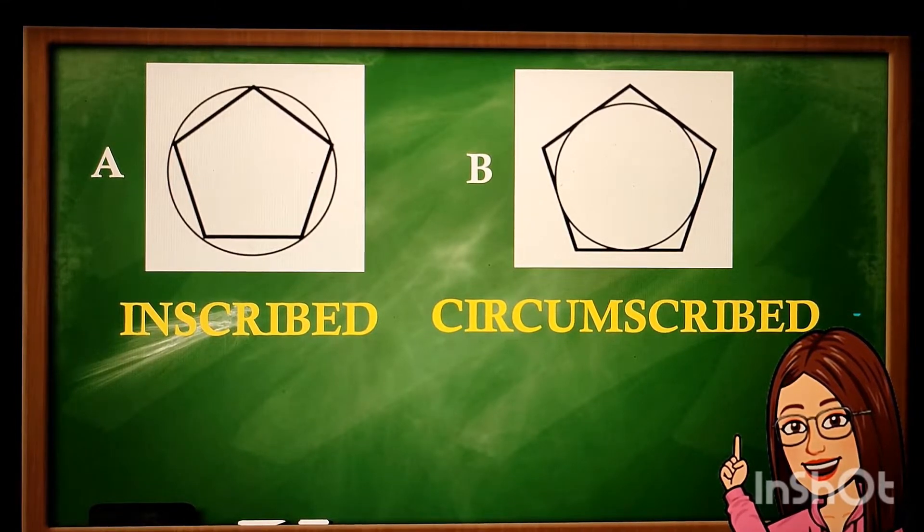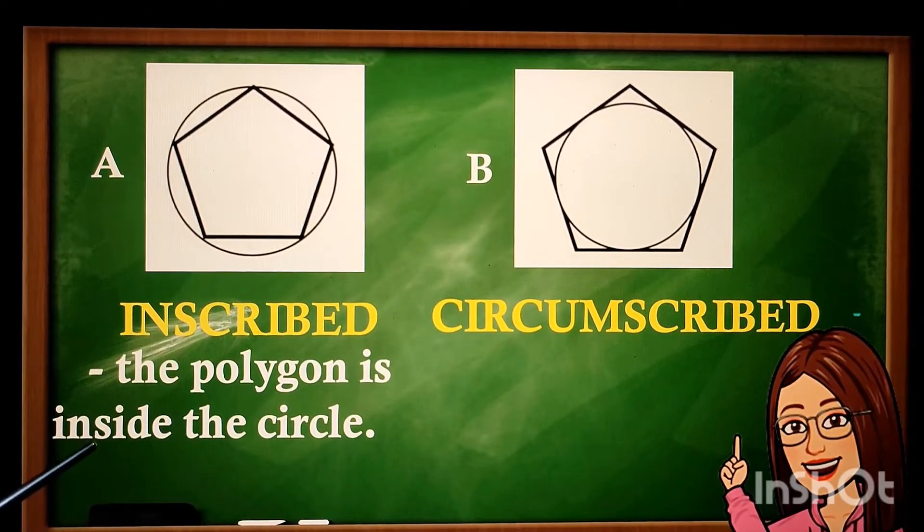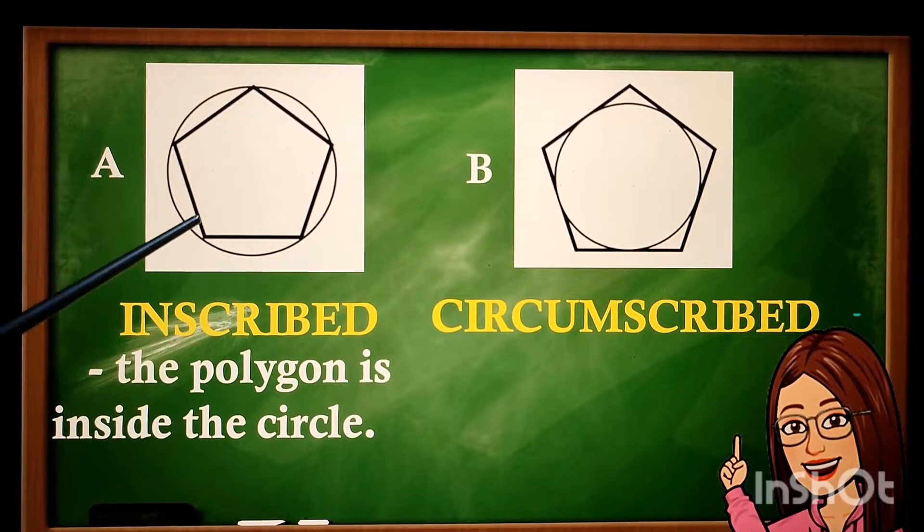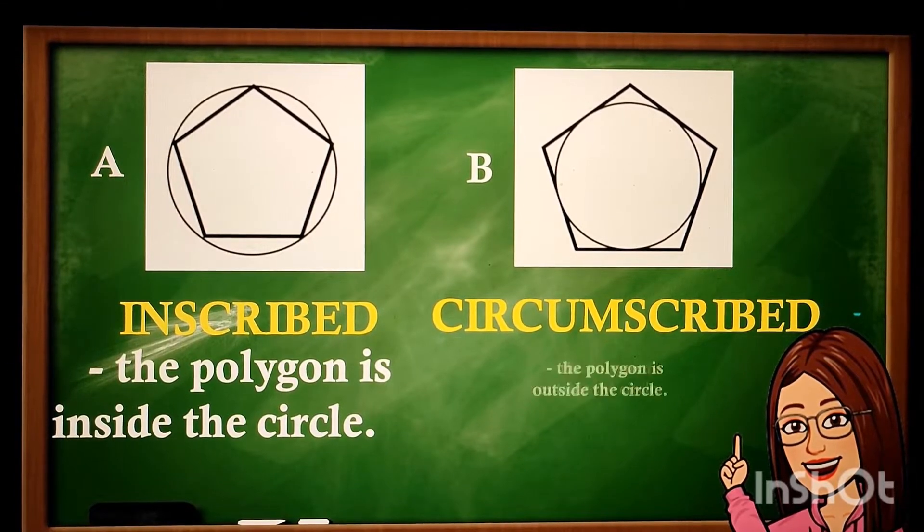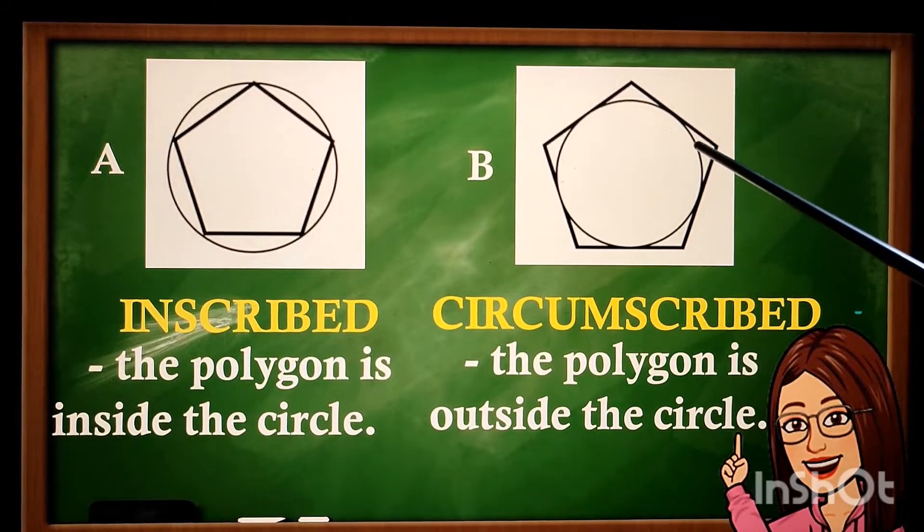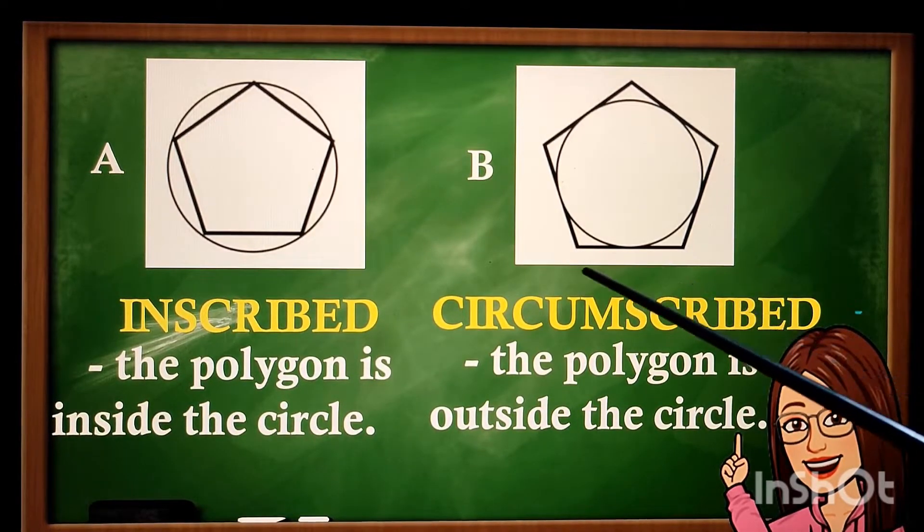When you say inscribed, the polygon is inside the circle. Here, the pentagon is located inside the circle. While circumscribed, the polygon is located outside the circle.